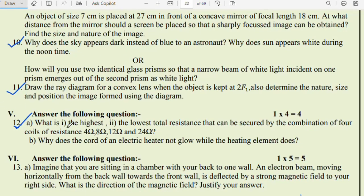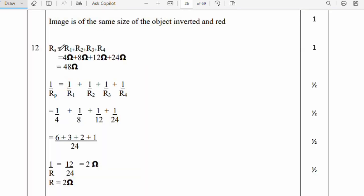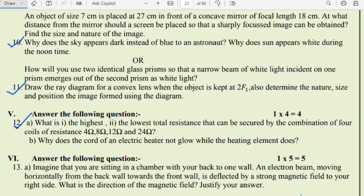Question 12: First question, what is the highest total resistance that can be secured by combination of four coils of resistance 4Ω, 8Ω, 12Ω and 24Ω? Next, what is the lowest total resistance that can be secured by the combination of four coil resistances? Highest resistance, they should be connected in series. Lowest, they should be connected in parallel. Rs = R1 + R2 + R3 + R4 = 48Ω, it is the highest. Lowest total resistance, we should connect the resistors in parallel. The parallel formula: 1/Rp = 1/R1 + 1/R2 + 1/R3 + 1/R4. After calculating LCM we get 12/24 = 2Ω. Highest, connect in series. Lowest, connect in parallel.